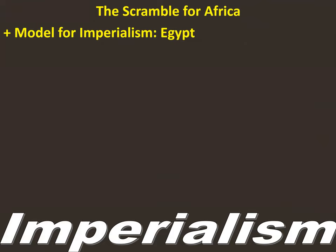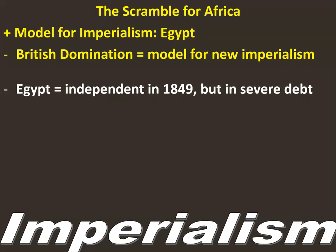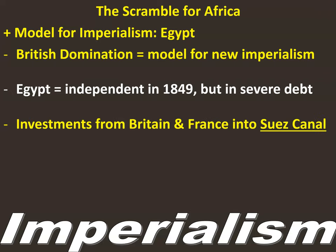To finish the scramble for Africa — what comes out is that the model for imperialism that all European countries try to replicate is the British control of Egypt. Egypt had been controlled since the time of Alexander the Great, by the Romans, by Arabic tribes in the Muslim conquests, the Ottomans, the Fatimids, the Seleucids, before finally winning independence in 1849. But as a new nation, Egypt runs into severe economic and debt problems.